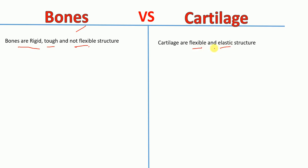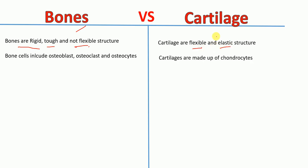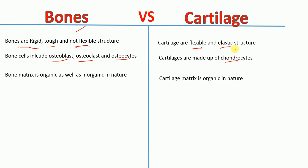The cells present in bones include osteoblasts, osteoclasts, and osteocytes, whereas the cells present in cartilage are chondrocytes. Bone matrix is organic as well as inorganic in nature, whereas cartilage matrix is organic in nature.